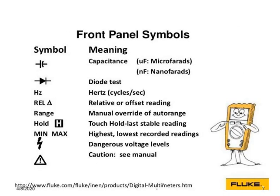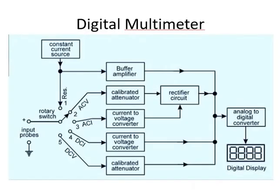The digital multimeter also consists of capacitance measurement, diode test, and hertz — how the frequency is measured in cycles per second or hertz, and so on. These are all given on the digital multimeter and we already use it in our practicals. There may be a question in your exam: explain the digital multimeter with its block diagram.